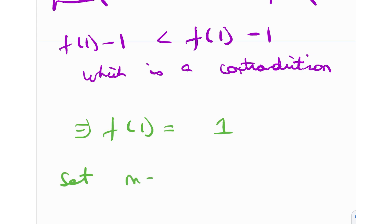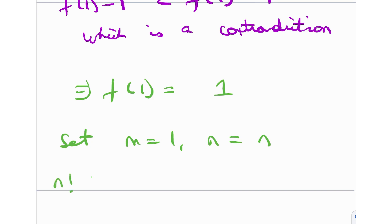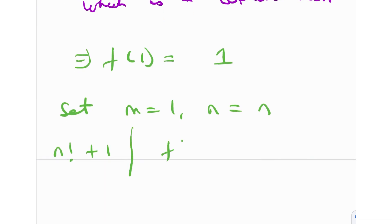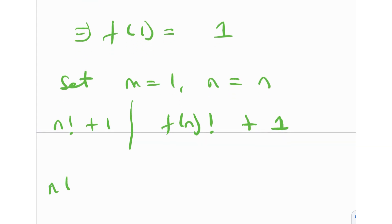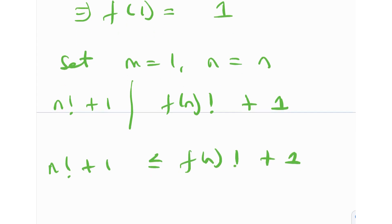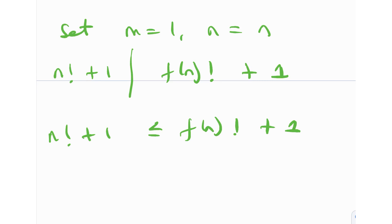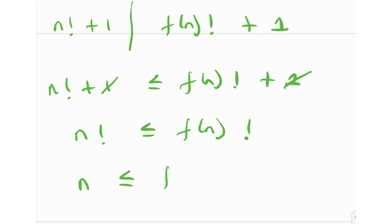Now I'm going to use my second substitution: m = 1 and n = n. When I do that, I get n! + 1 dividing f(n)! + 1. From that, n! + 1 ≤ f(n)! + 1, so by canceling 1 from both sides, n! ≤ f(n)!. This essentially means n ≤ f(n) for all n belonging to the natural numbers — a very cool result.